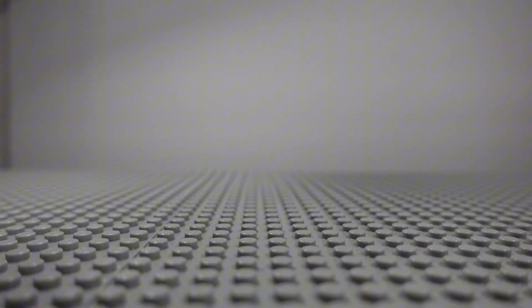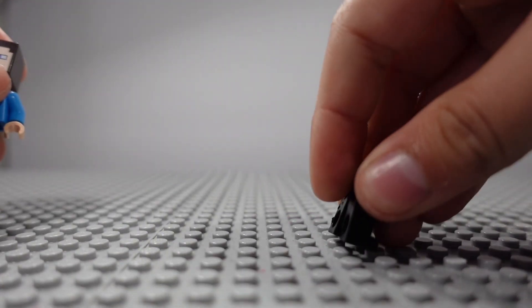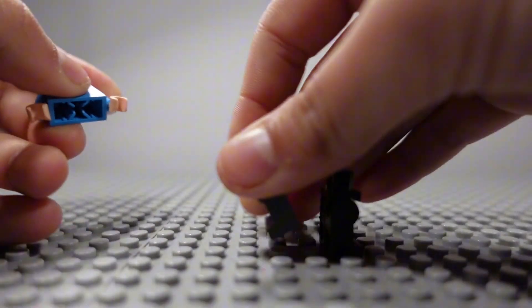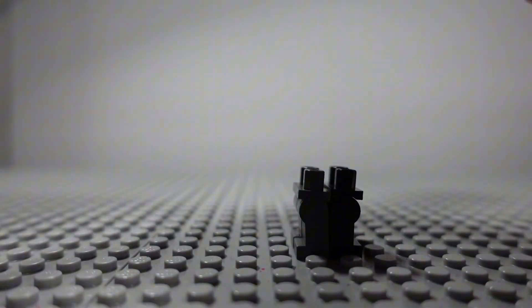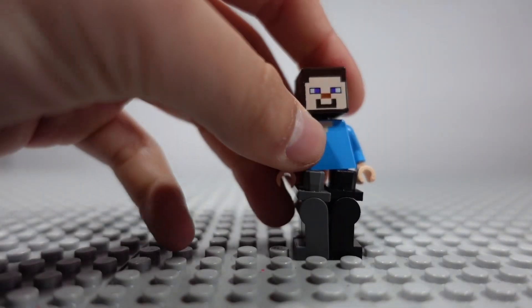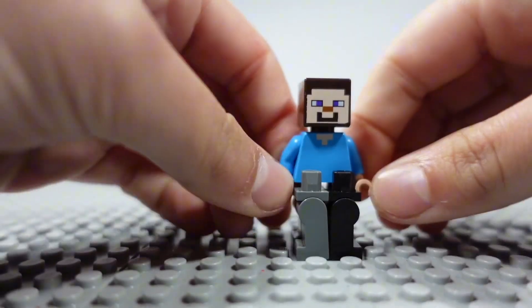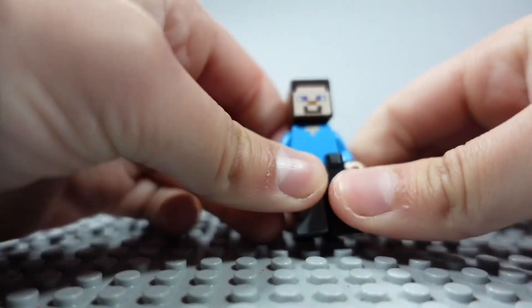This one you'll need two legs. Get one there and put one right there. And then you get a torso with a head on it and put him in, and now he's got Squidward style legs.